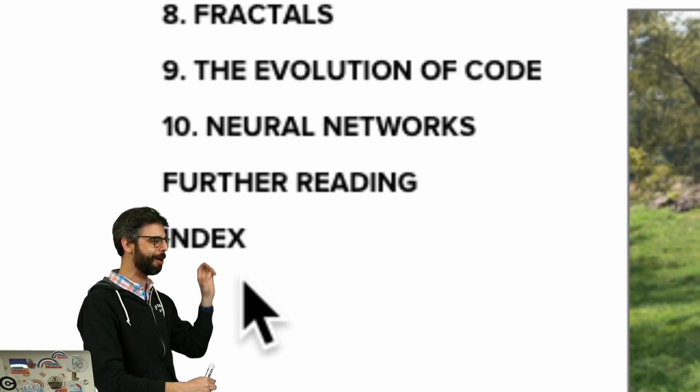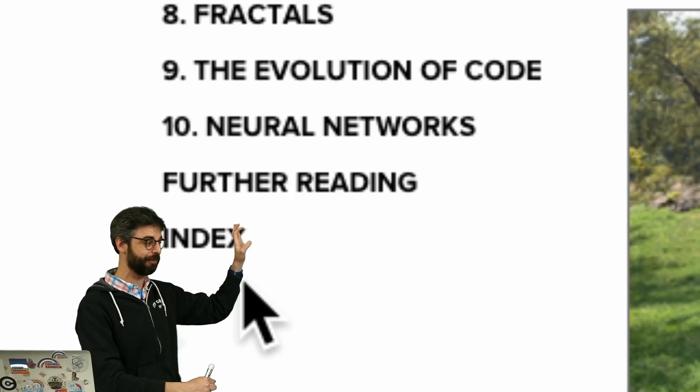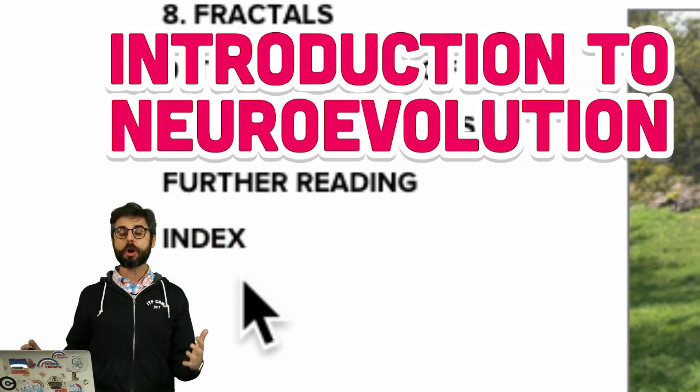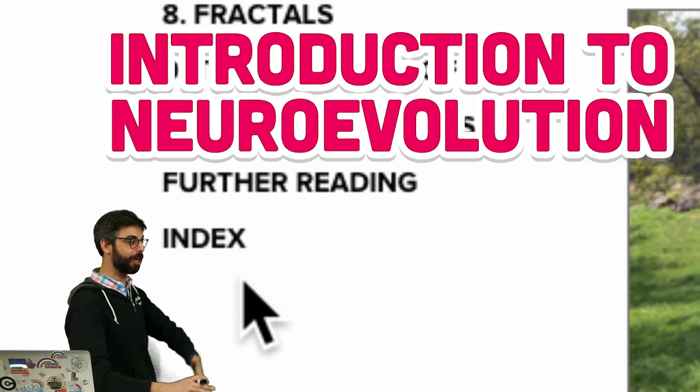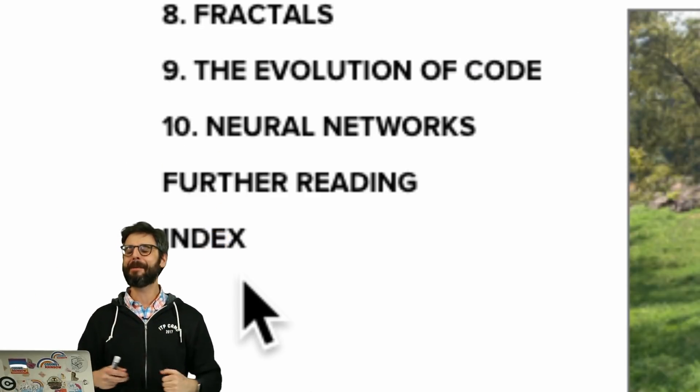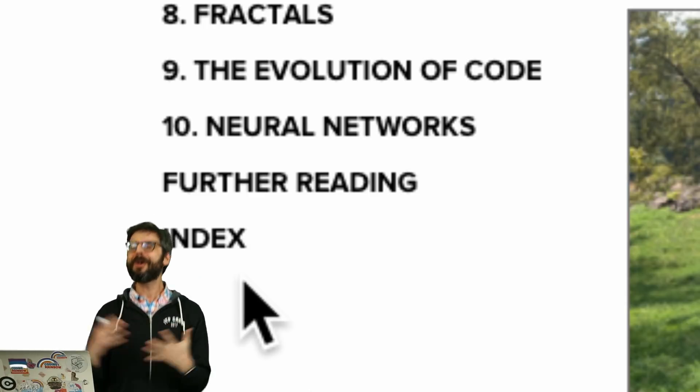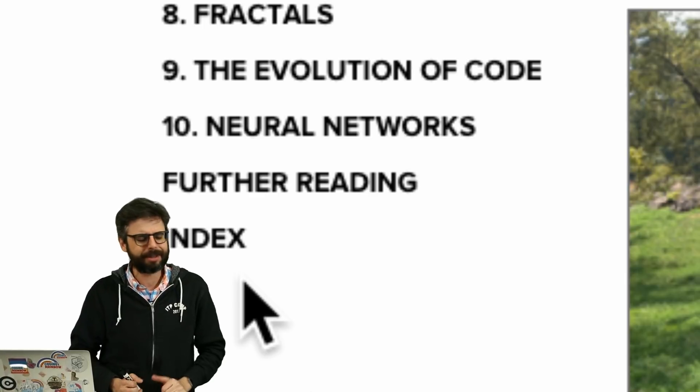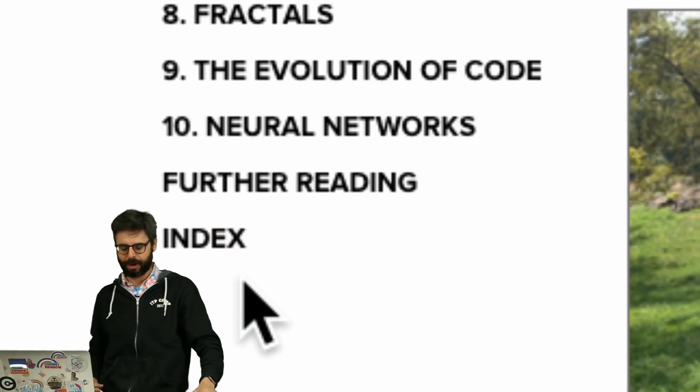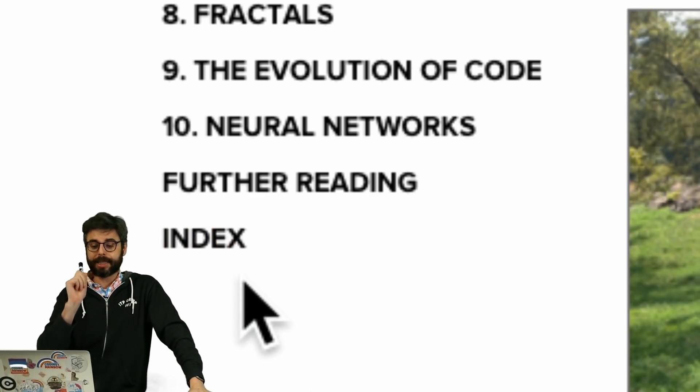Today I'm going to start talking about something that I want to be in the next edition of the Nature of Code in chapter 11 called neuroevolution. I want to take the idea of a genetic algorithm and a neural network and use them together in a magical way to make wonderful things happen.